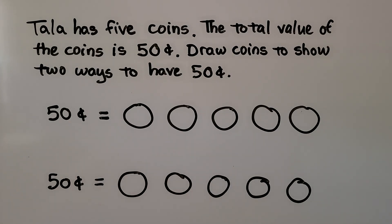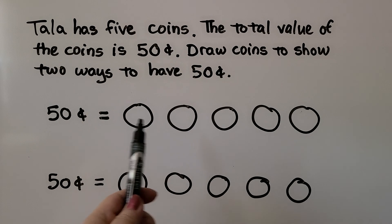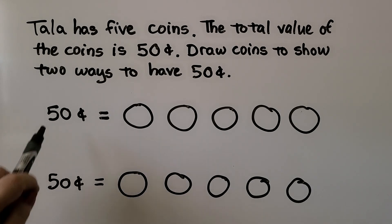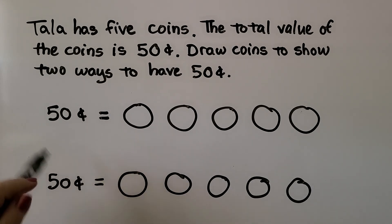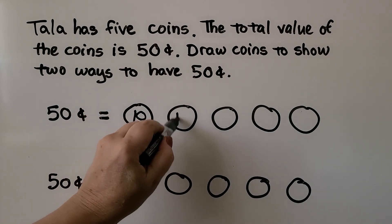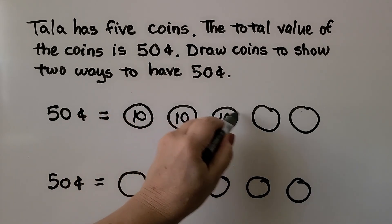Tala has five coins and the total value is 50 cents. Draw coins to show two ways to have 50 cents using exactly five coins. We could right away think of five dimes — that would be 50 cents.